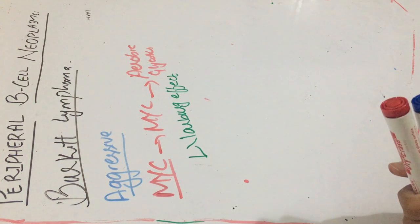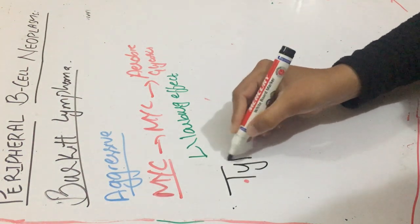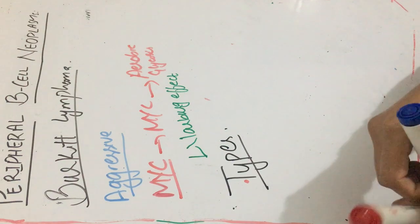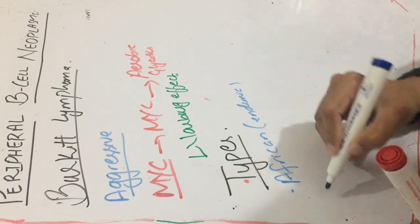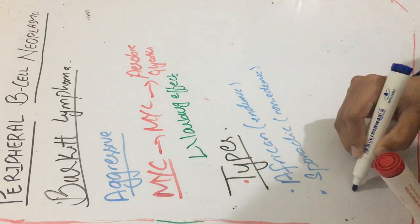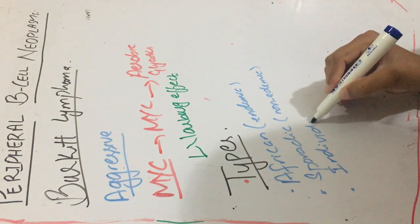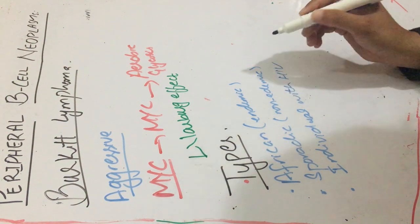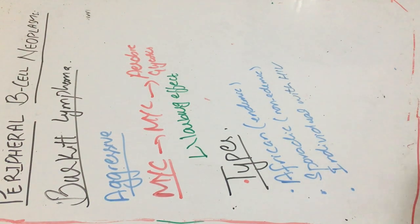There are three main types of Burkitt lymphoma: the first is African Burkitt lymphoma, which is endemic; the second is sporadic Burkitt lymphoma, which is non-endemic; and the third is an aggressive lymphoma subset occurring in individuals with HIV.